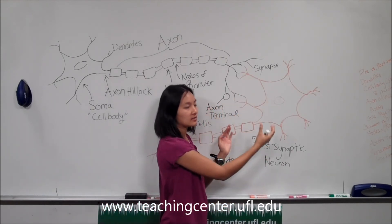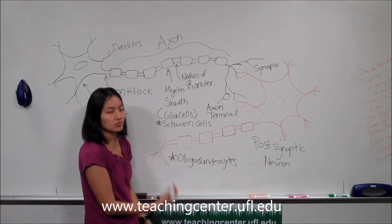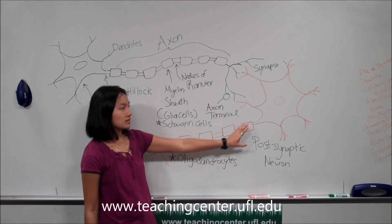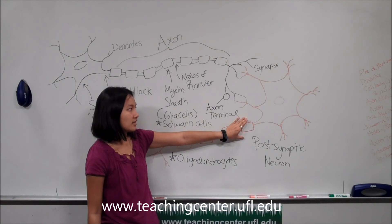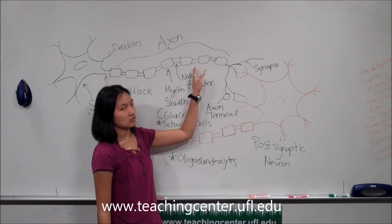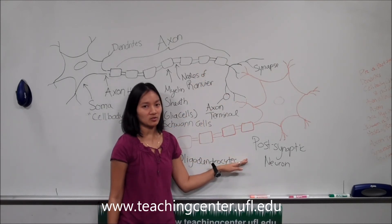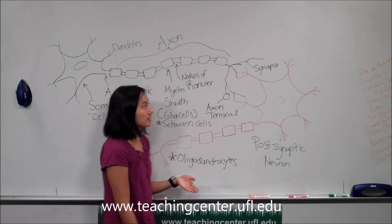Add up all the signals and create another action potential throughout the axon. So this brown neuron right here which received the signal from this black neuron is known as the postsynaptic neuron after the synapse.